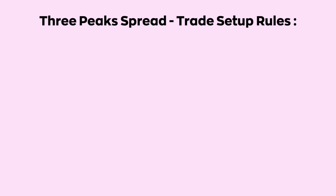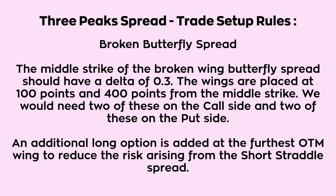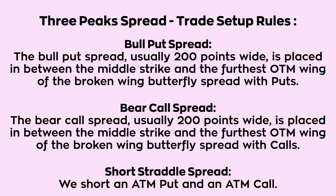Now to the trade setup rules. The middle strike of the broken wing butterfly spread should have a delta of 0.3. The wings are placed at 100 points and 400 points from the middle strike. We would need two of these on the call side and two on the put side. An additional long option is added at the furthest out-of-the-money wing to reduce the risk arising from the short straddle.